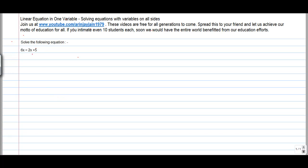Many times we get problems where we have an unknown variable on both sides. Let's say this is the problem. We've been asked to solve the following equation: 6x = 2x + 5.